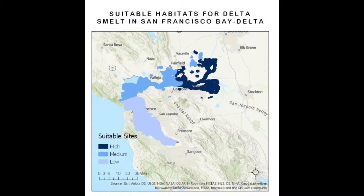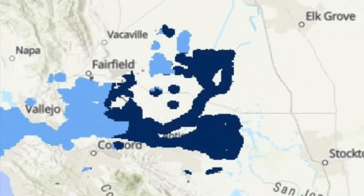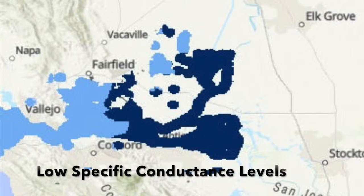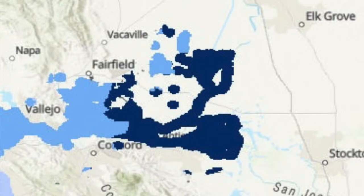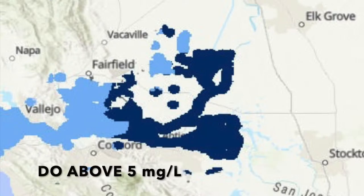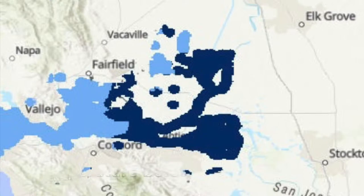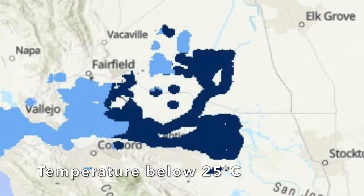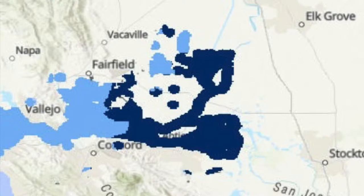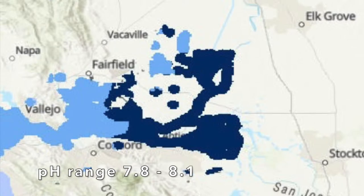Our final product shows a map representing high, medium, and low suitability for Delta smelt. We found the most suitable habitat was in the Upper Bay Delta region, where there was low specific conductance, dissolved oxygen levels were above 5 milligrams per liter, water temperature was below 25 degrees Celsius, and pH concentrations ranged from 7.8 to 8.1.